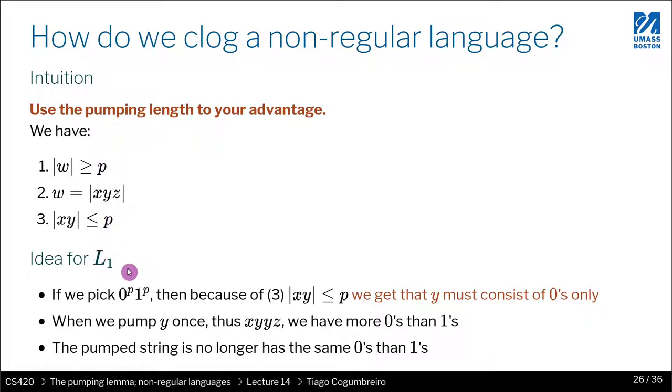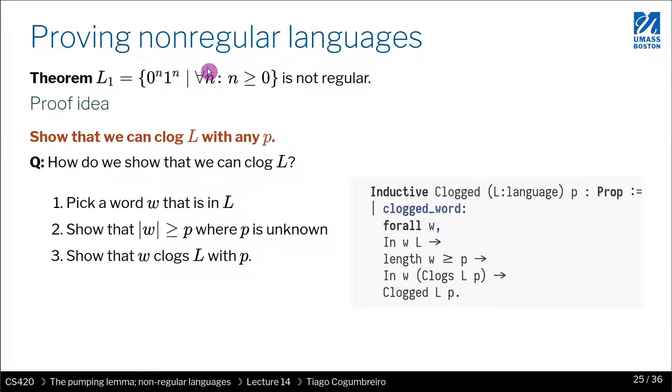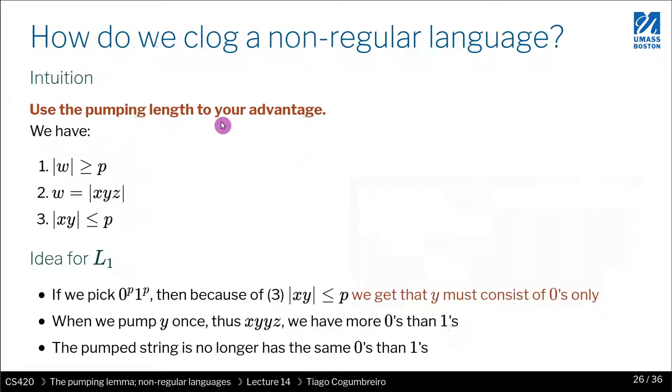So to go back to L₁, which is the language that we're trying to show is not regular, we will select the power that we're selecting. So we can pick any number of zeros and number of ones. We're going to select the number of zeros to be P, the length of the pumping, the pumping length.